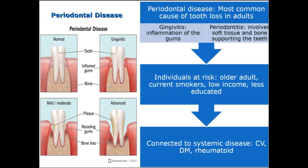Periodontal or gum disease is an infection of the tissues that hold your teeth in place. It is typically caused by poor brushing and flossing habits that allow plaque, a sticky film of bacteria, to build up on the teeth and harden. It starts with swollen, red, and bleeding gums. If left untreated, it can spread to the bones surrounding the gums, making it painful to chew. In the worst cases, teeth may become loose or need to be removed.